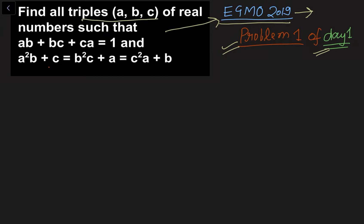We need to find the triples (A, B, C) of real numbers such that AB + BC + CA = 1, and A²(B + C) = B²(C + A) = C²(A + B). Now let's see how we can approach this question.